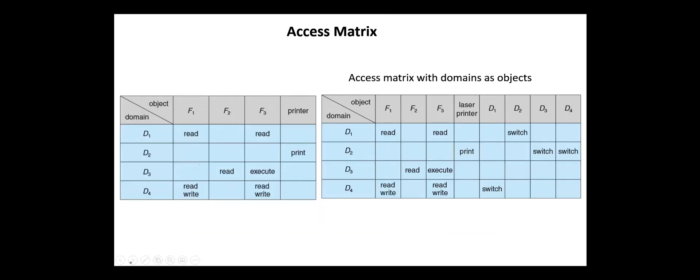The access matrix provides a mechanism for defining and implementing strict control for both static and dynamic associations between processes and domains. The switch operation can be used to switch from domain to another. Domain switching can be controlled by including domains among the objects of the access matrix. Switching from domain DI to domain DJ is allowed if and only if the access right switch belongs to access IJ.